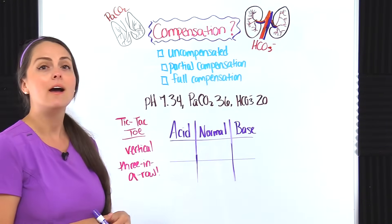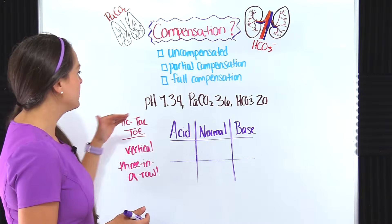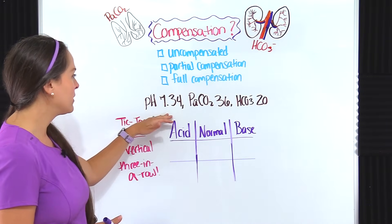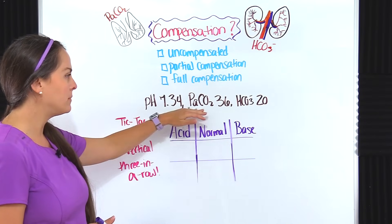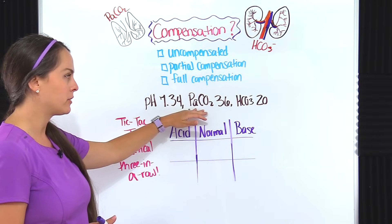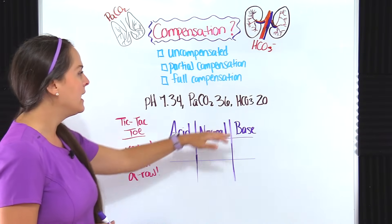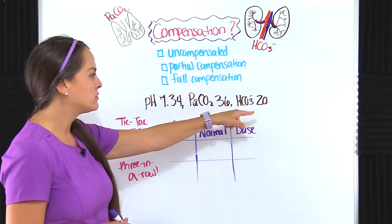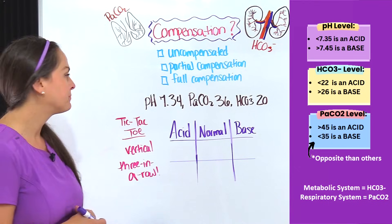I'm going to give you a simple way on how to figure this out. Here's our problem: we have a pH of 7.34, a PaCO2 of 36 — this represents the respiratory system — and a bicarb of 20, which represents the metabolic system.